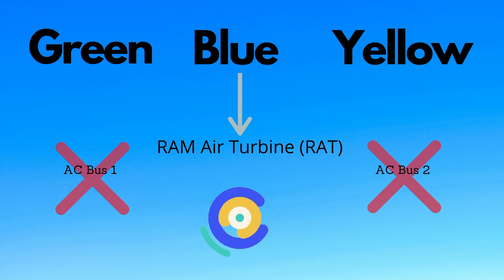The blue system has a backup in the form of the ram air turbine, also known as the RAT. The RAT is coupled to a hydraulic pump and allows the blue system to function if electrical power in both engines is lost, that is both AC bus 1 and AC bus 2 are lost.